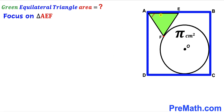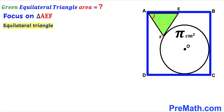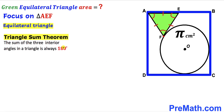Let's focus on the green shaded triangle AEF. We know this is an equilateral triangle, so all interior angles are congruent and all side lengths are congruent. Recalling the triangle sum theorem — the sum of three interior angles in a triangle is always 180 degrees — since all angles are congruent, each interior angle must be 60 degrees.